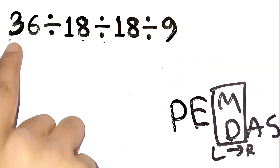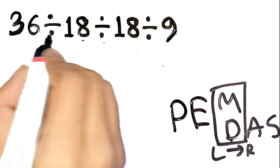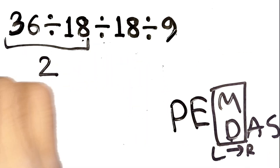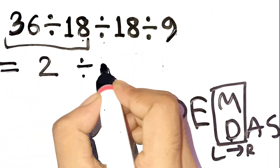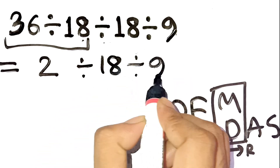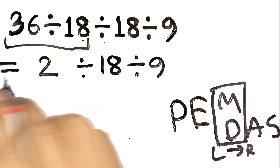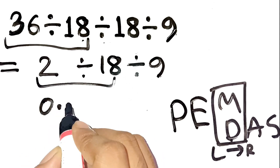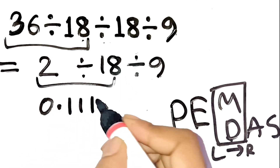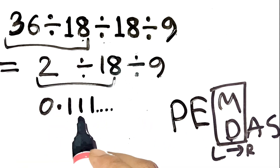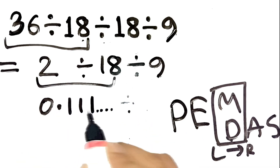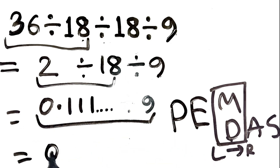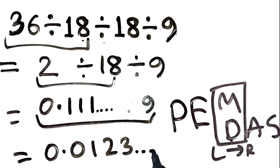Step 1 — start from the left: 36 divided by 18 equals 2. Now the expression is 2 divided by 18 divided by 9. Step 2: 2 divided by 18 equals 0.111 repeating. Step 3: 0.111 repeating divided by 9 equals 0.0123 repeating.